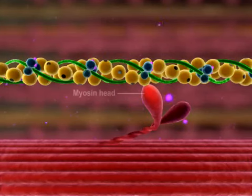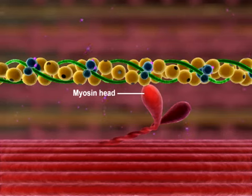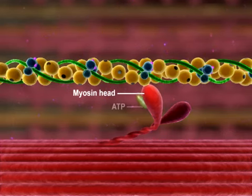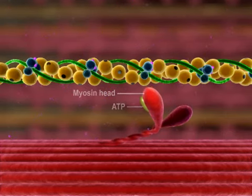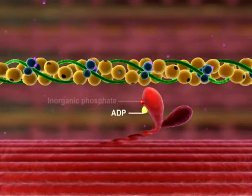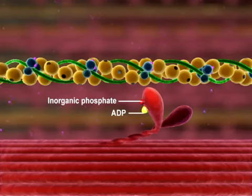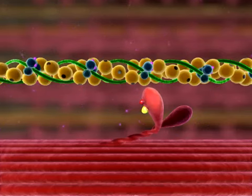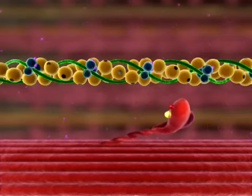The myosin head must be activated before a crossbridge cycle can begin. This occurs when ATP binds to the myosin head and is hydrolyzed to ADP and inorganic phosphate. The energy liberated from the hydrolysis of ATP activates the myosin head, forcing it into the cocked position.